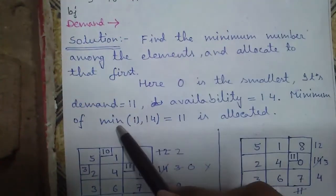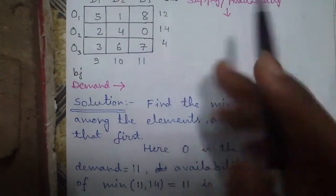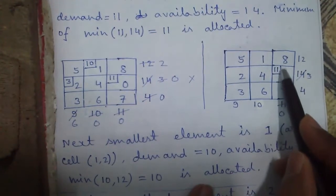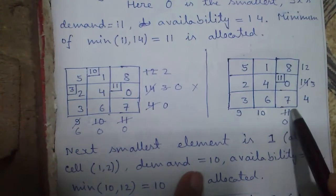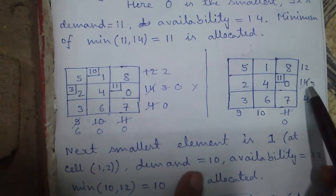So minimum of 11, 14, 11 allocated to location 0. Allocation means writing the allocated value in a small box in that cell. So if we allocate 11 to 0 our total demand against 0 will be 0 and supply will reduce from 14 to 3 after allocating 11.